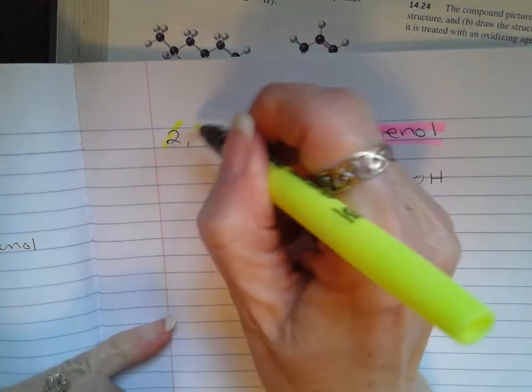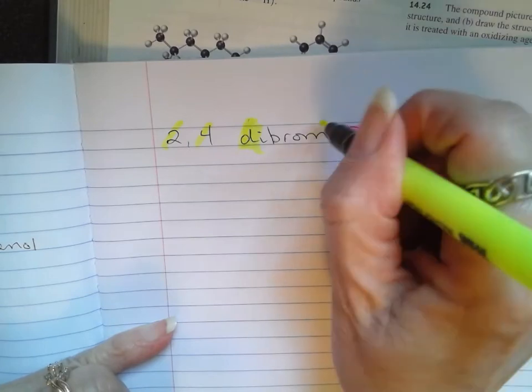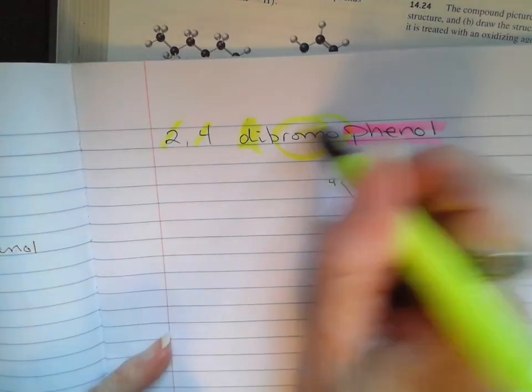And at positions 2 and 4, we have bromines. Okay, so it has dibromo in there.